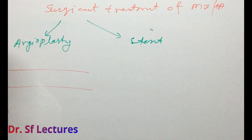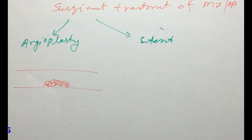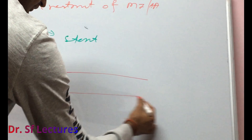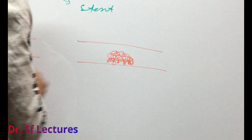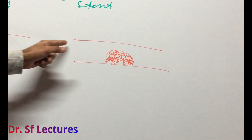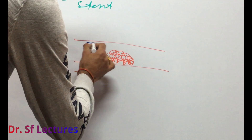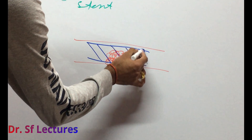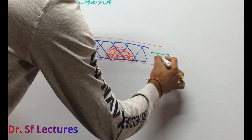This is our coronary artery, and here is the plaque or clot. In a stent procedure, using a special catheter, the surgeon will put a stent into the coronary artery. The stent will widen the coronary artery, and blood supply will continue to the tissue.